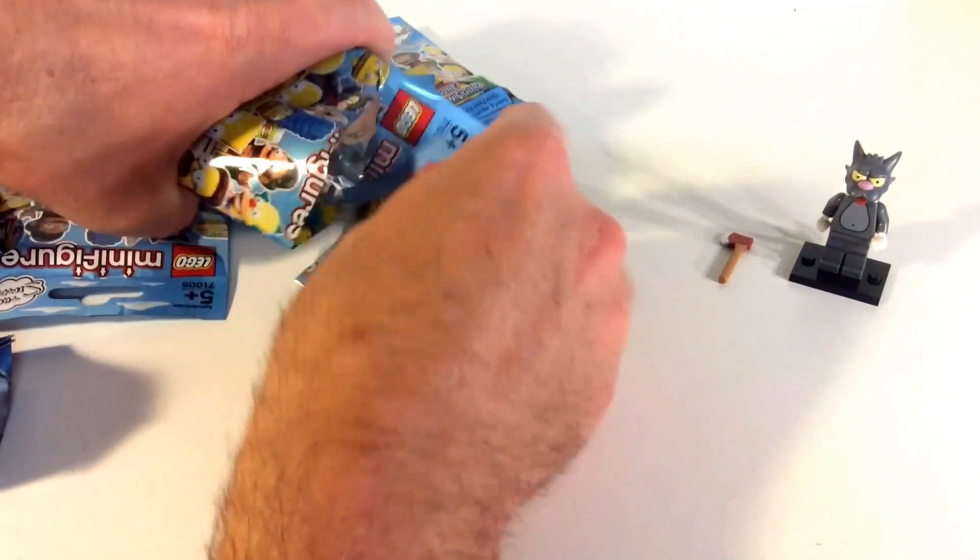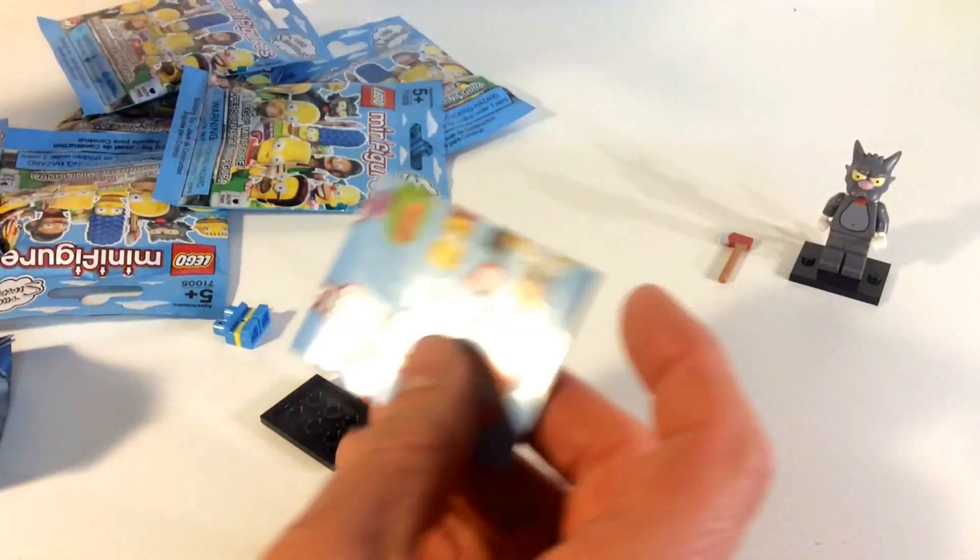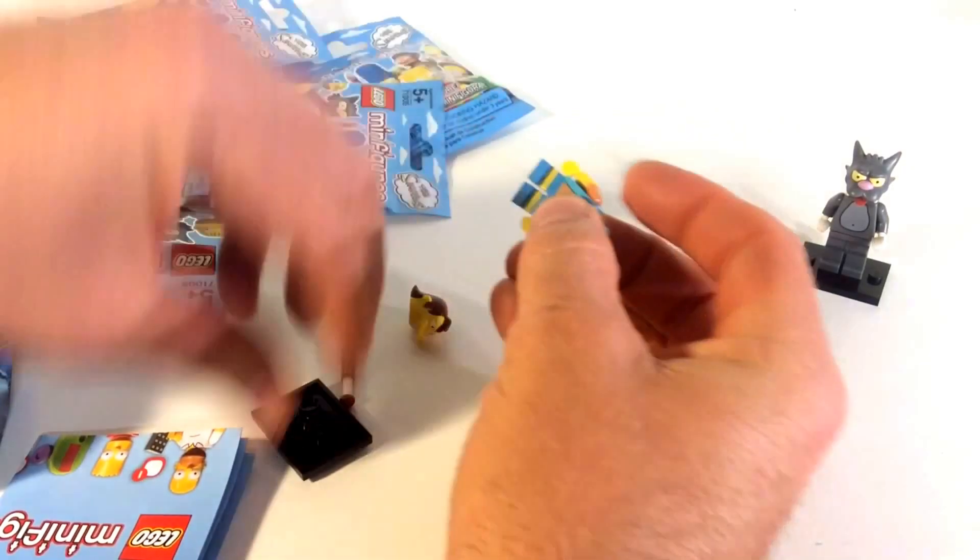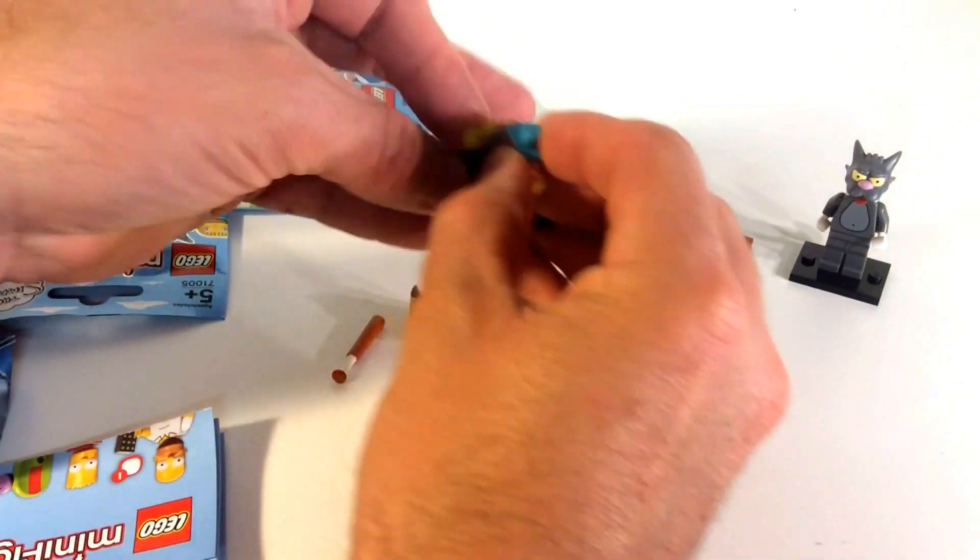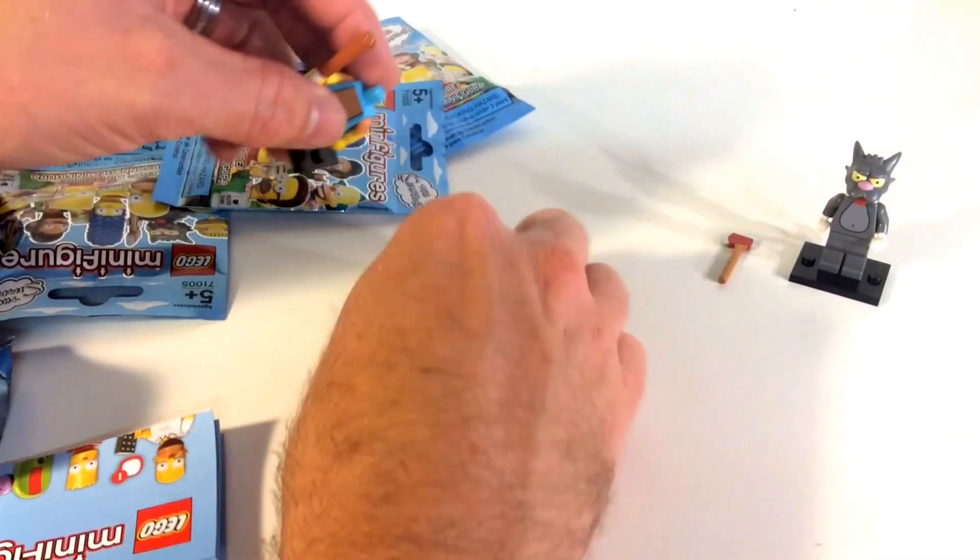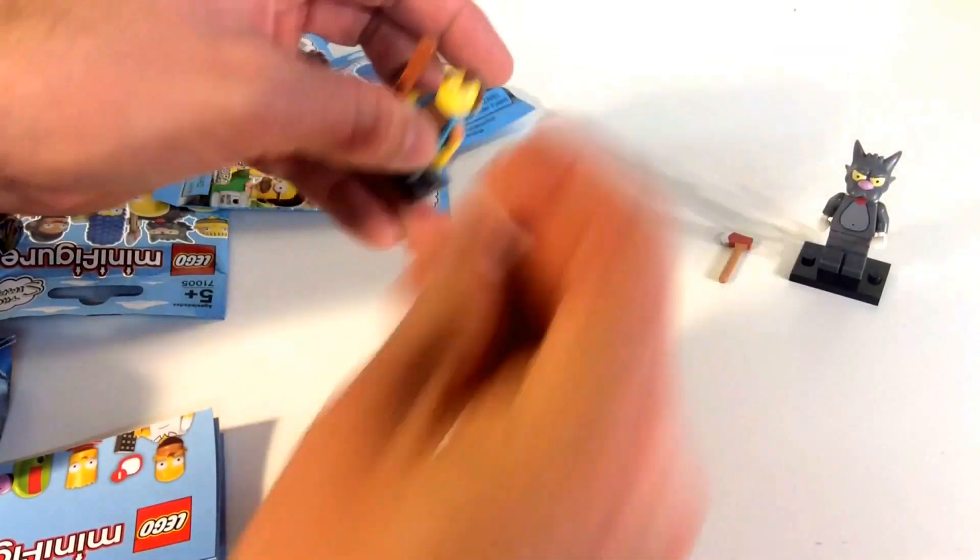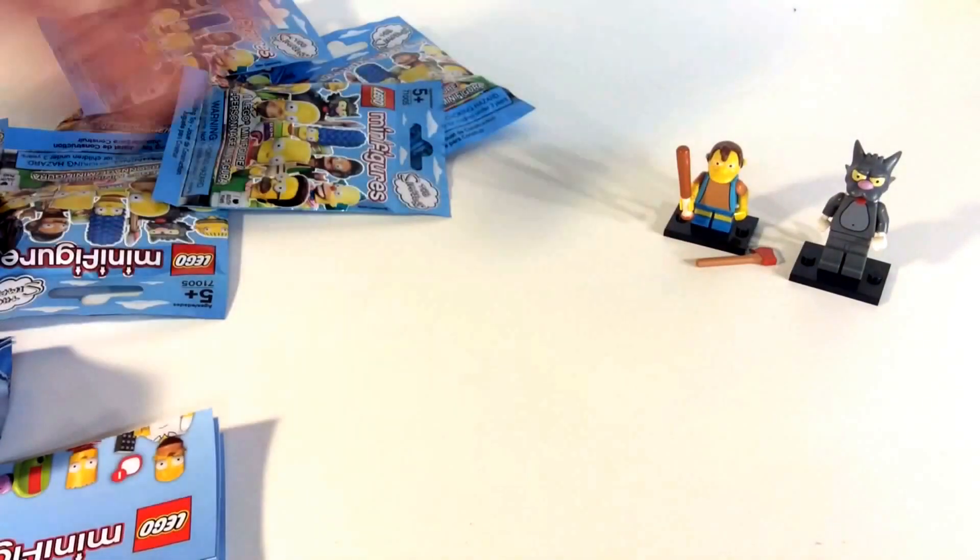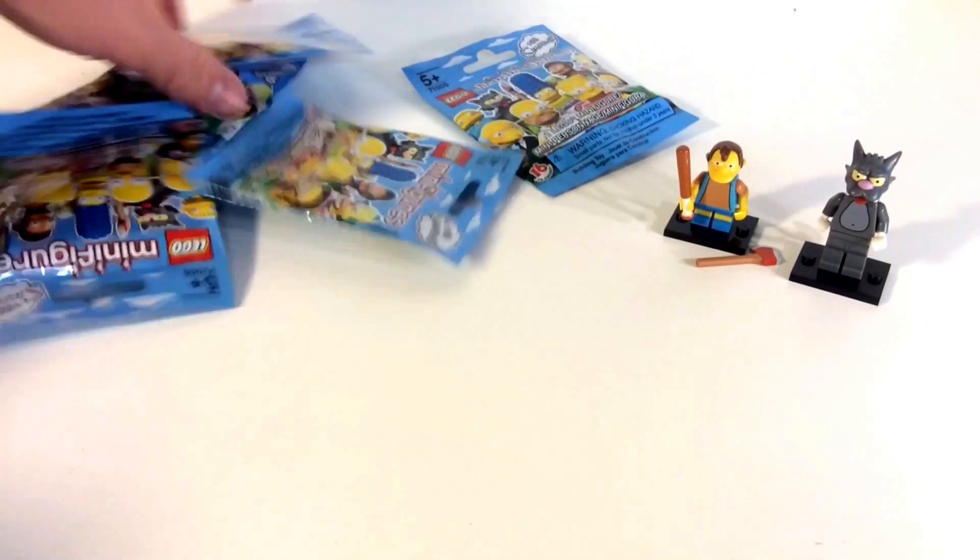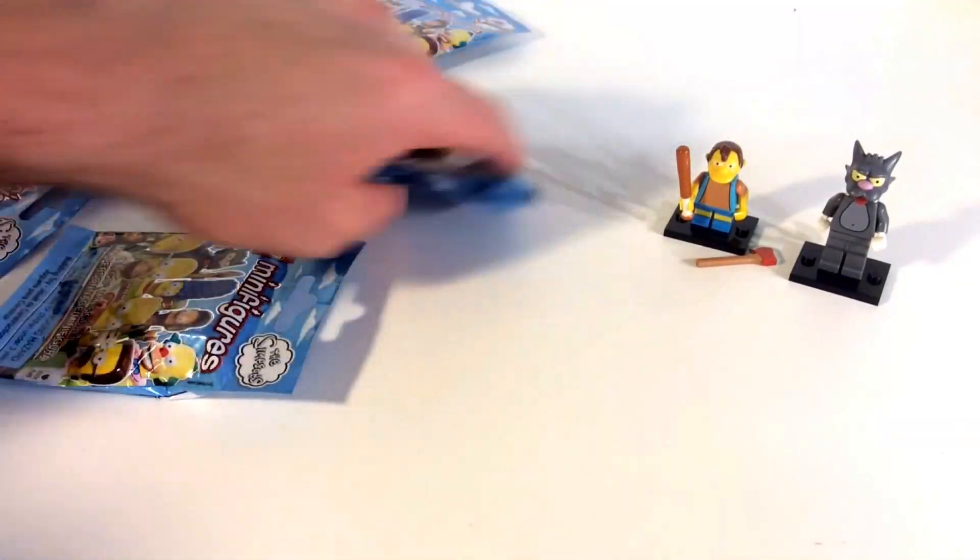So this one we got, this is the bully. And you guys know who all these people are so I don't have to feel bad that I don't know. Here we go, we got that one, number two. Let's see, how many more do I have here? I got one, two, three, four, five, six, so we'll get right into it.